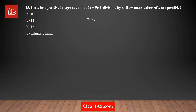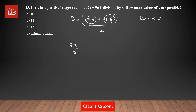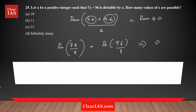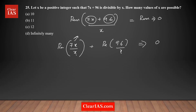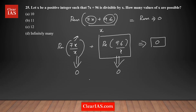Coming back to the question: 7x + 96 divisible by x means the remainder when dividing by x is 0. Using the addition rule, find the remainder of each term separately. Since 7x is a multiple of x, its remainder is 0. Therefore, 96 divided by x must also have remainder 0, meaning x must be a factor of 96.